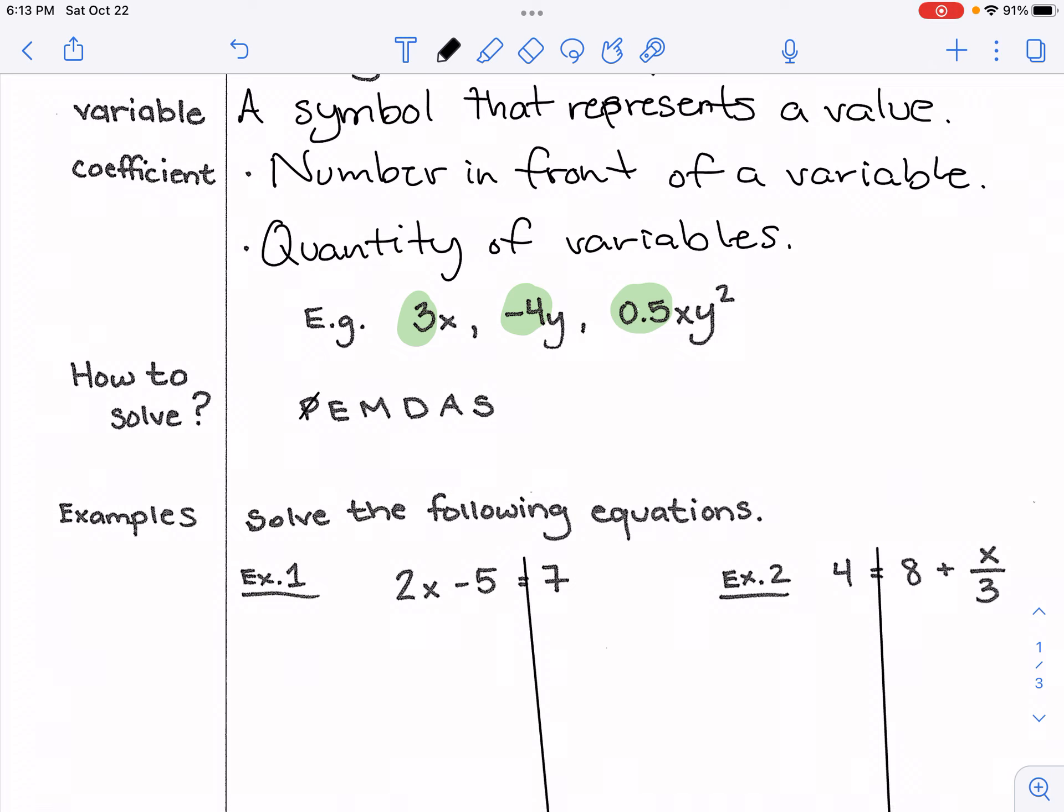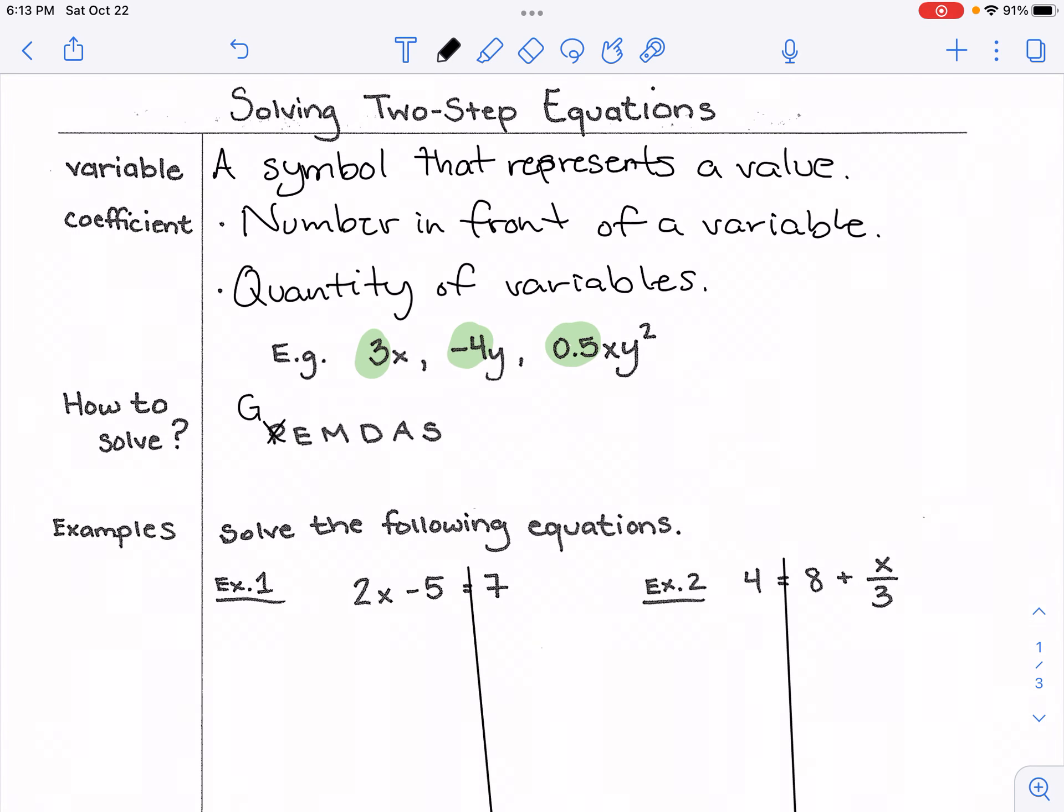You've been using the acronym PEMDAS for probably a lot of your education, but we're going to adjust this here. Instead of P we're going to put G. The reason here is P stands for parentheses, but G is kind of more inclusive because G stands for grouping. Parentheses is one type of group, but there are a lot more groups here: parentheses, brackets, or the numerator or denominator of a fraction, and we'll see an example soon.